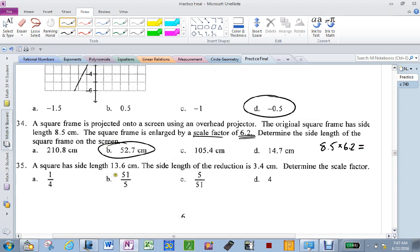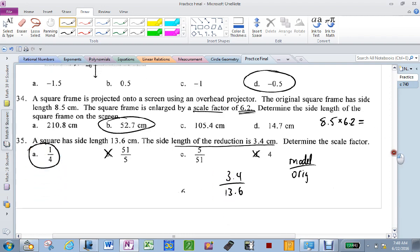A square has a side of 13.6. The side length of the reduction. So remember, it's model over original. So it's 3.4 over 13.6. Right? So then you just got to check which one of these it is. Well, it can't be 4 because it's a reduction. It can't be 51 because it's a reduction. So it has to be one of these two. You can quite plainly see that 3 goes into 13 four times. So it must be 1 quarter without even getting your calculator out.